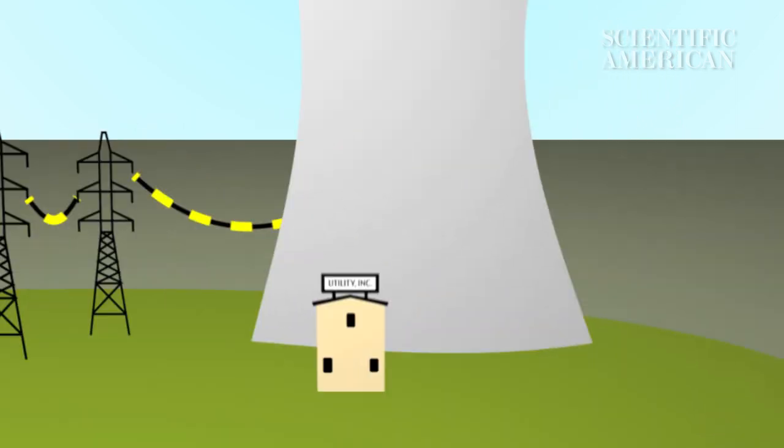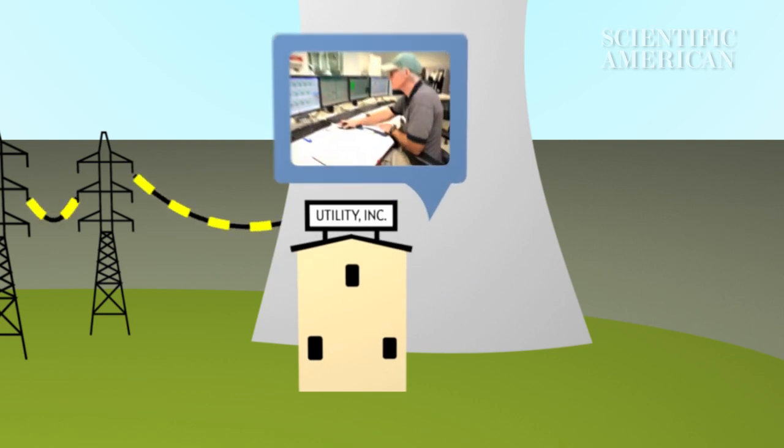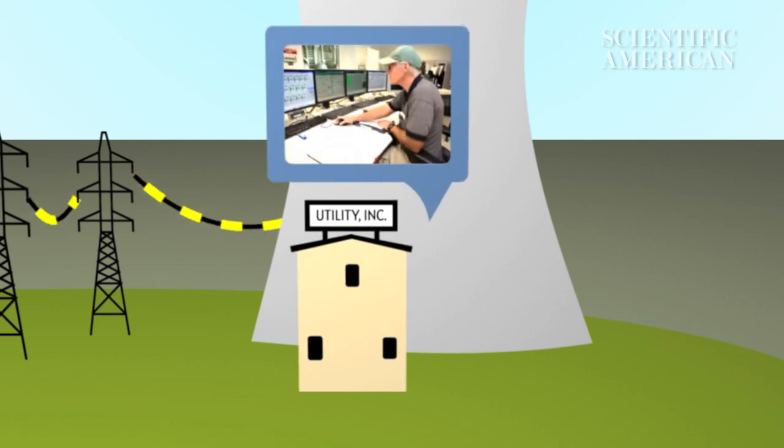For utilities, this means balancing a heavy load, trying to match the supply of electricity perfectly and nearly instantly with demand.